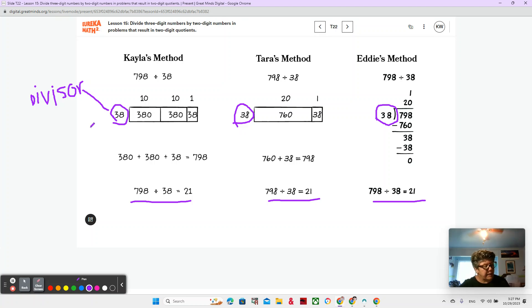And you notice that Kayla and Tara are both using area models, but the area models look a little bit different. Kayla's using two rectangles. She has 10 times 38 is 380, 10 times 38 is 380, and Tara's doing 20 times 38 is 760. So she has 20 groups of 38 represented here, where Kayla has 10 groups in two chunks. Kayla has three partial quotients, 1, 2, 3. And Tara only has two partial quotients.